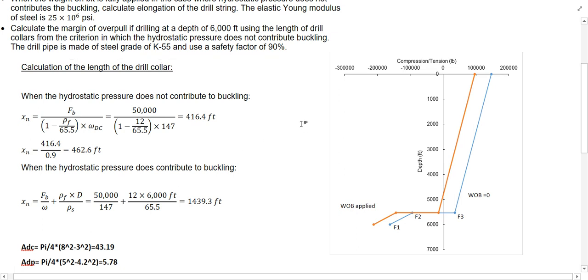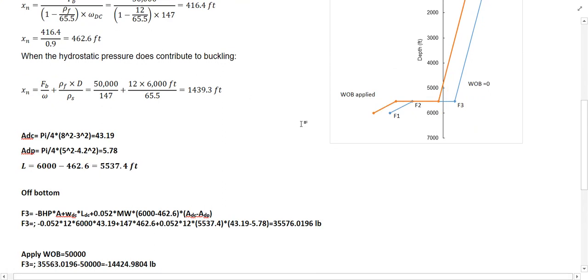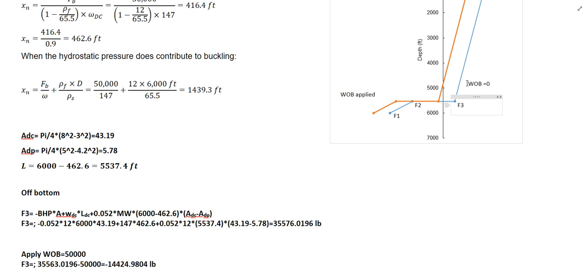The next part is asking us to find the elongation of the drill pipe when the weight on bit is zero (off bottom) and when the weight on bit is applied. For finding the elongation, we need to find the force that is applying on the drill pipe. You can refer back to the first video, or follow along as I explain how to find F3.